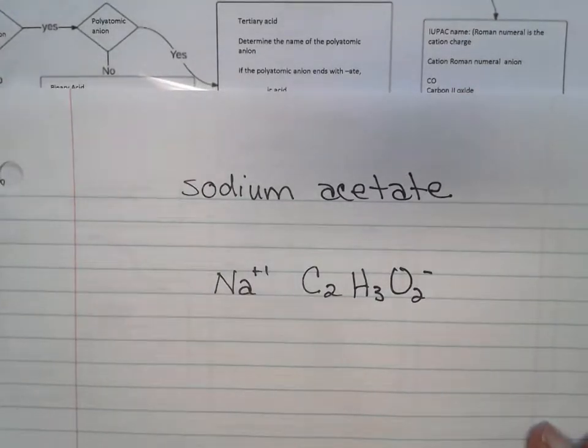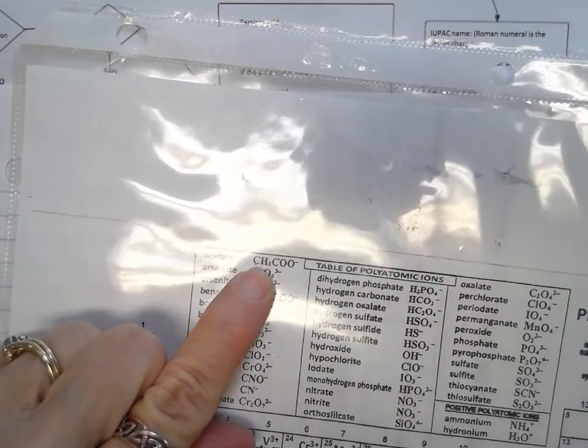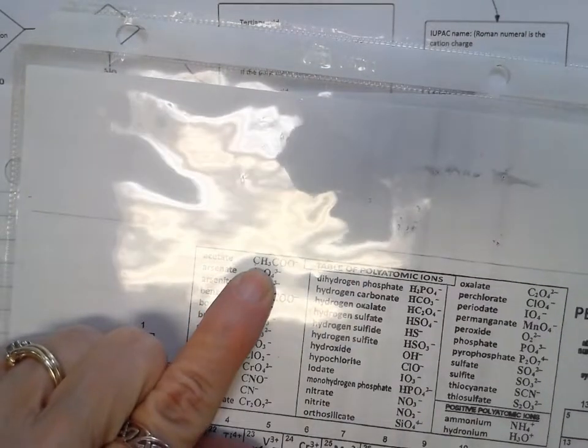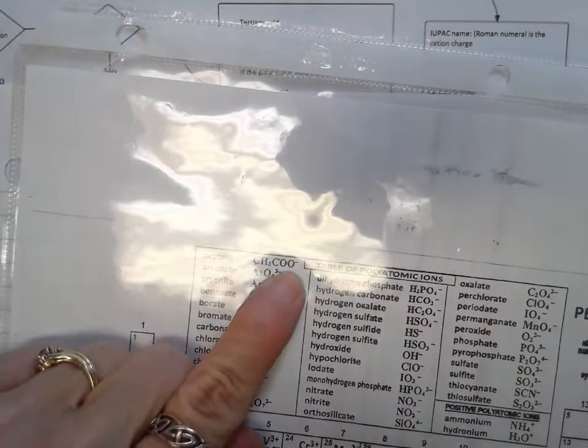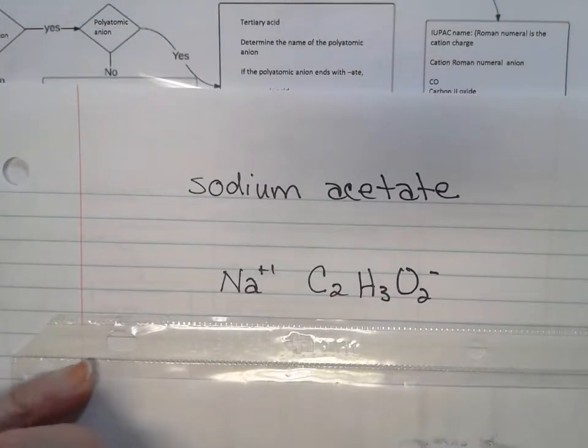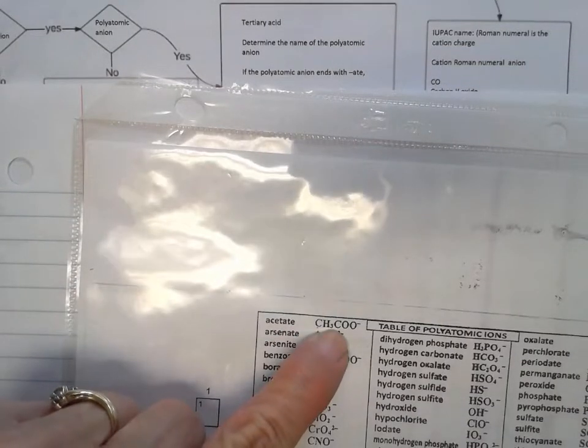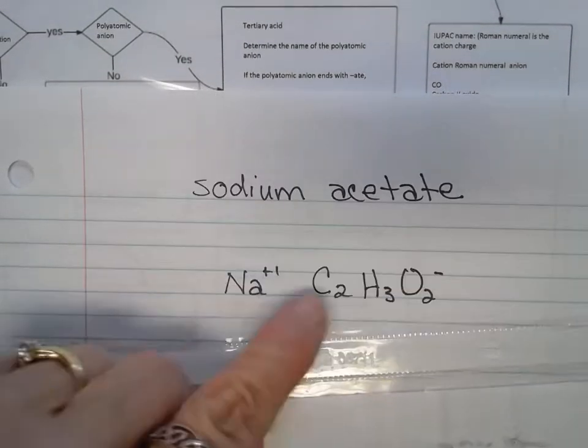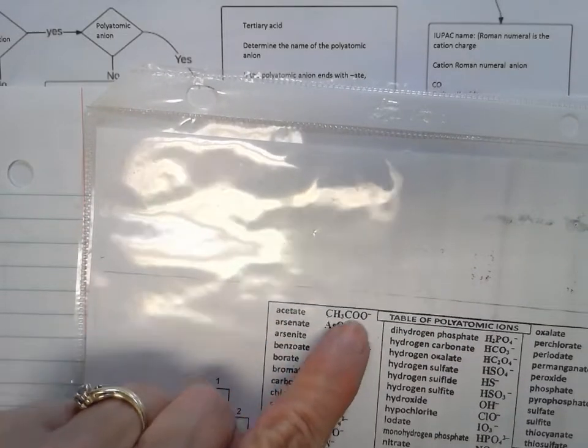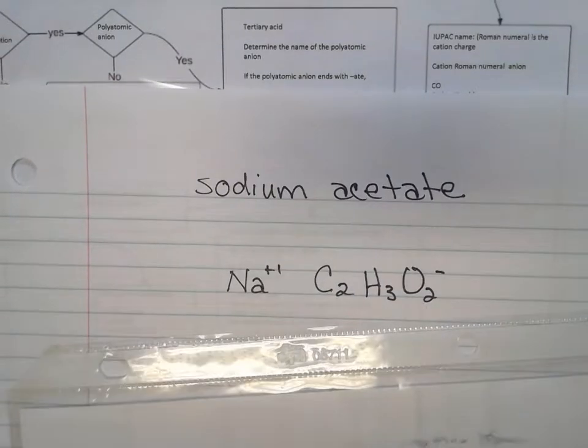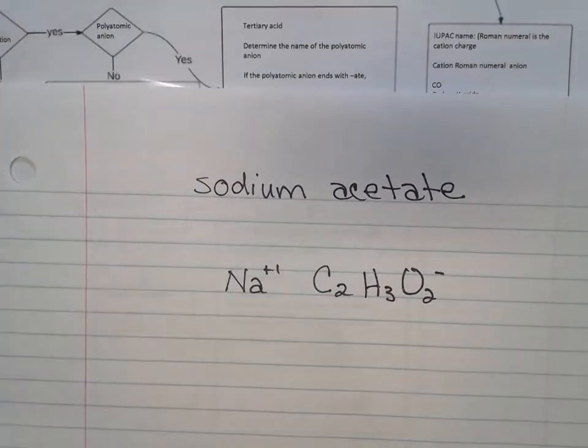I do want to tell you that sometimes when you look up acetate, it will be given to you this way: CH3COO with a negative one charge. Notice it's the same thing. C2, you've got two carbons, H3, and then O2. It's the same thing, we're just writing it a different way.